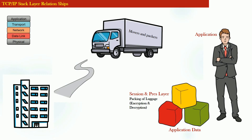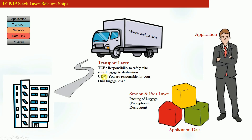The courier company is equivalent to the transport layer. In the transport layer we have two famous protocols: TCP and UDP. If the courier company takes responsibility to safely transport your luggage to the destination, it behaves as TCP. Otherwise, if the courier company does not take responsibility for the safety of your luggage, it behaves like UDP. This courier company is responsible for transporting your luggage from your current residence to your new residence, acting as the transport layer.